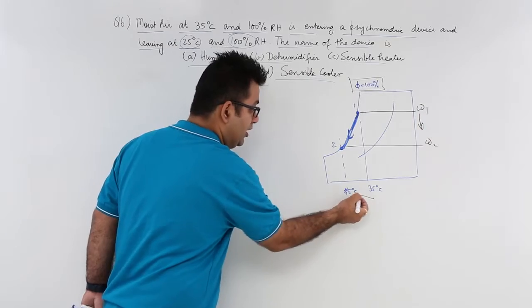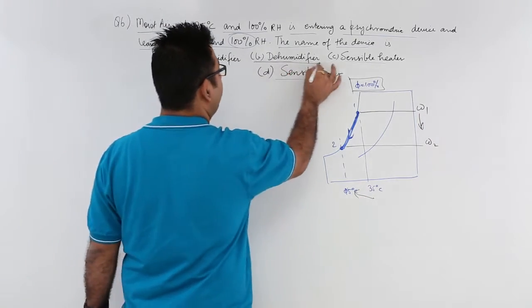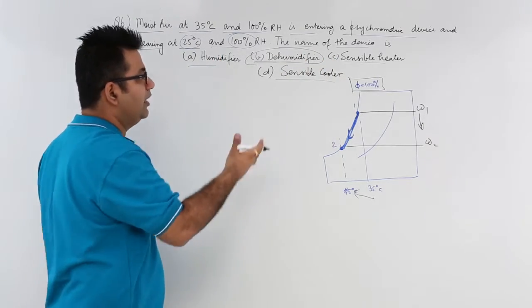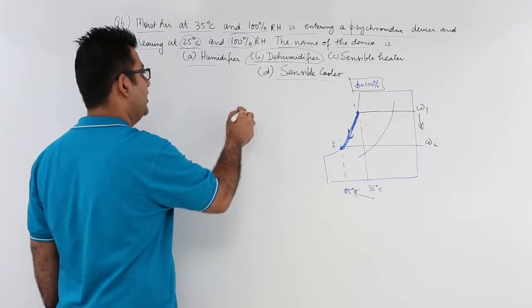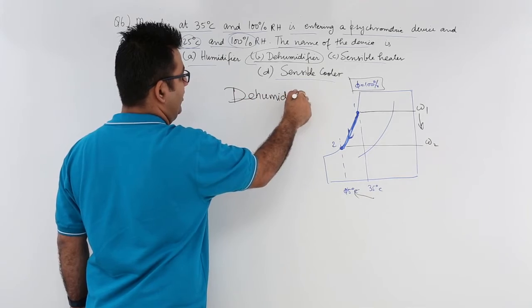And also the DBT has decreased. This means we are dehumidifying the sample of moisture. So the psychometric device which we are using here is dehumidifier.